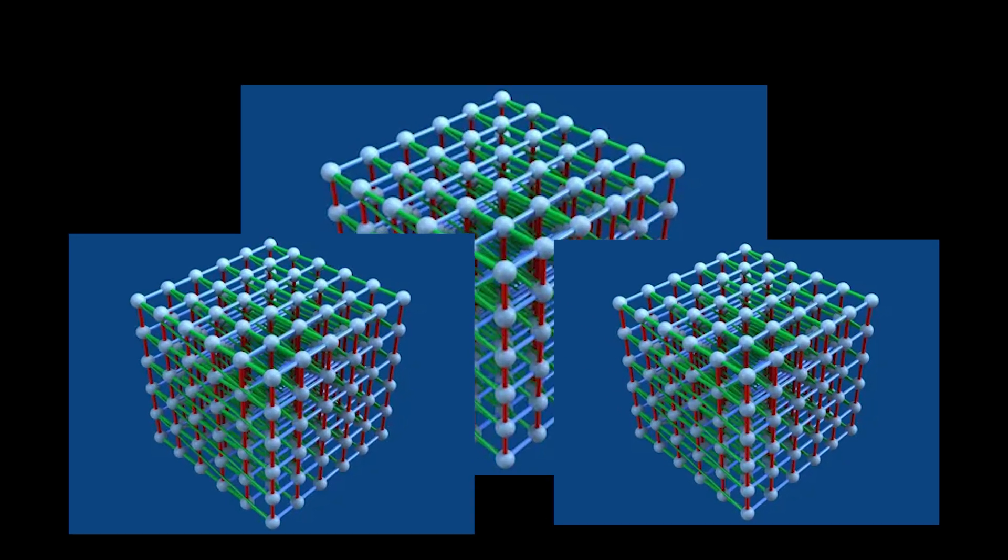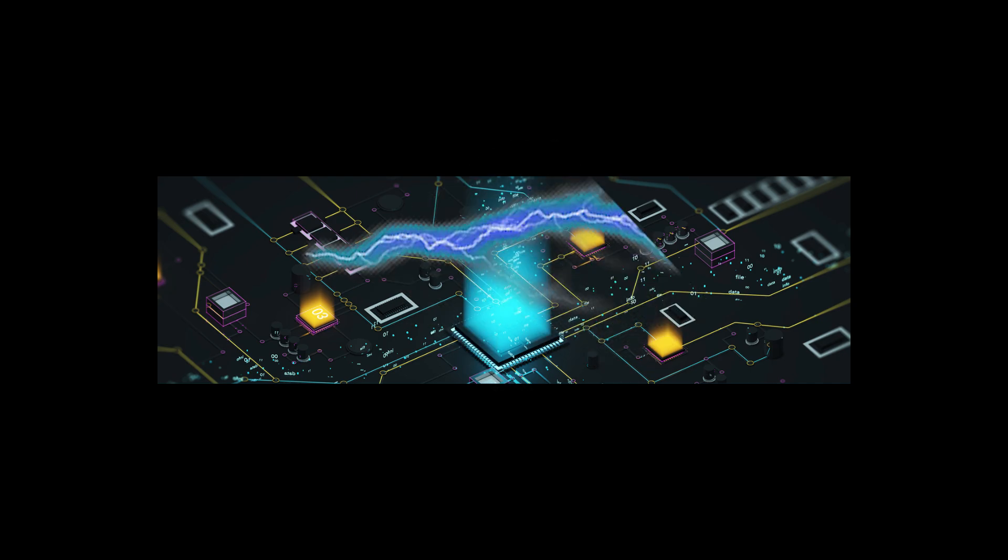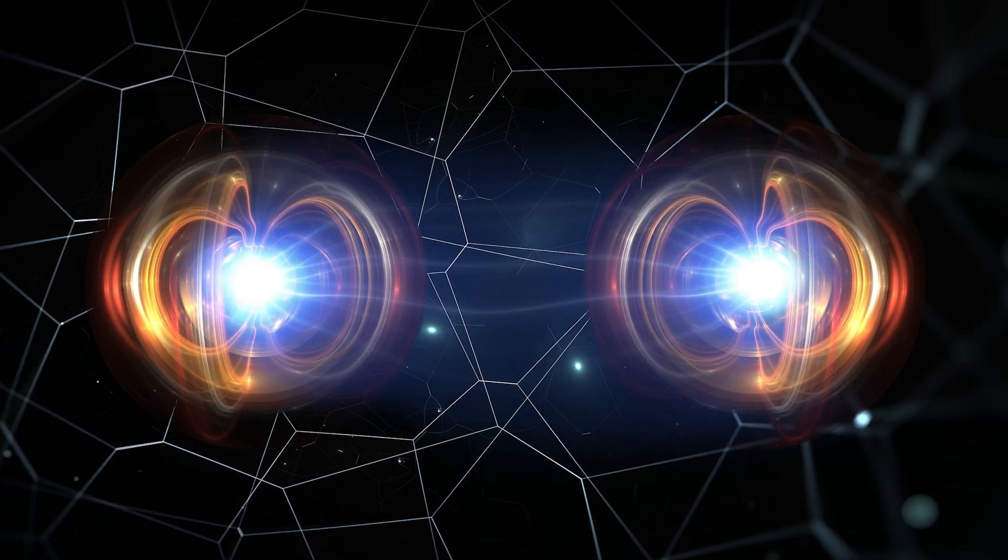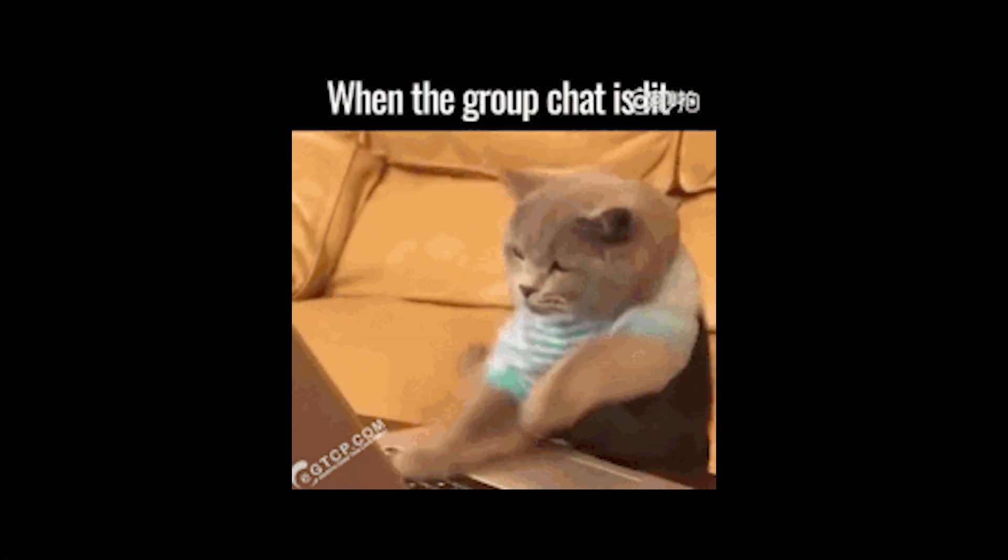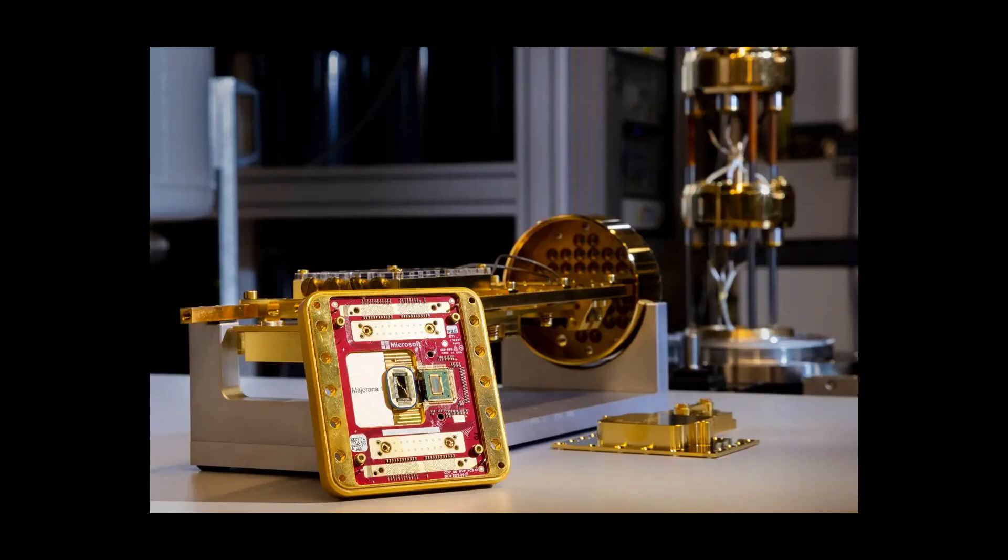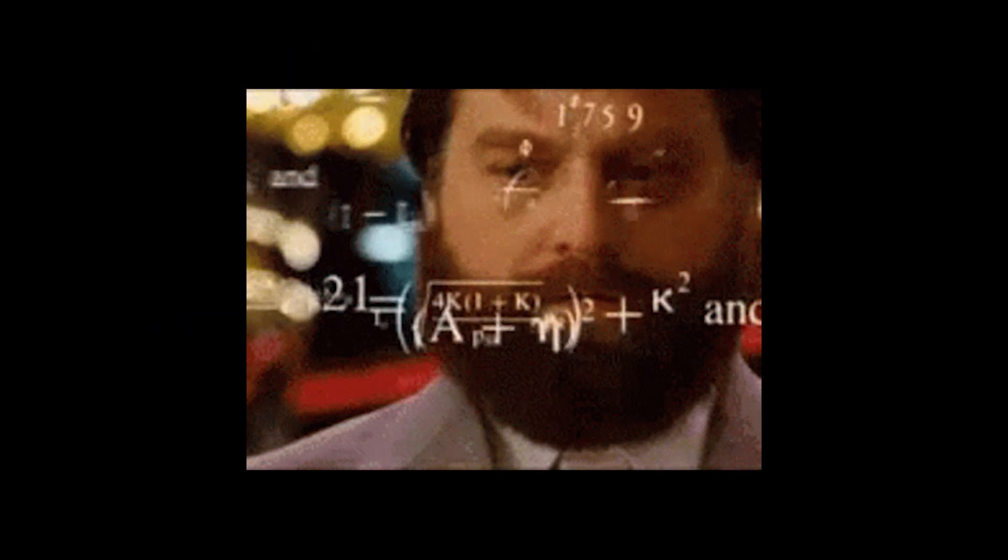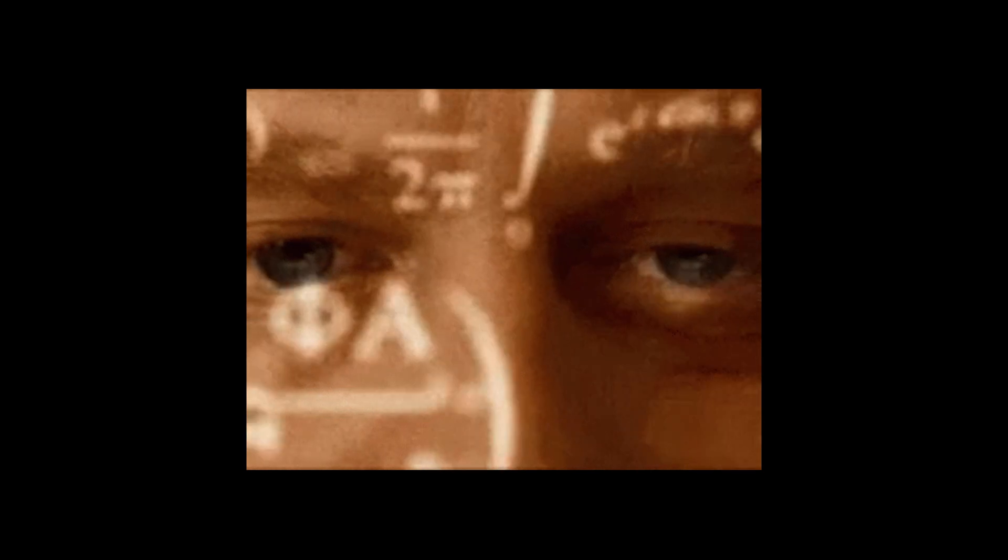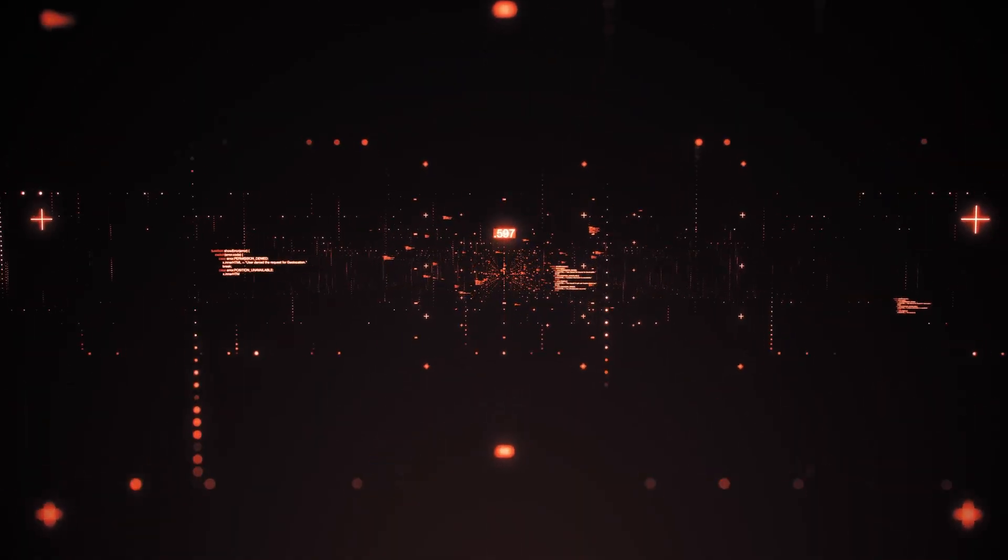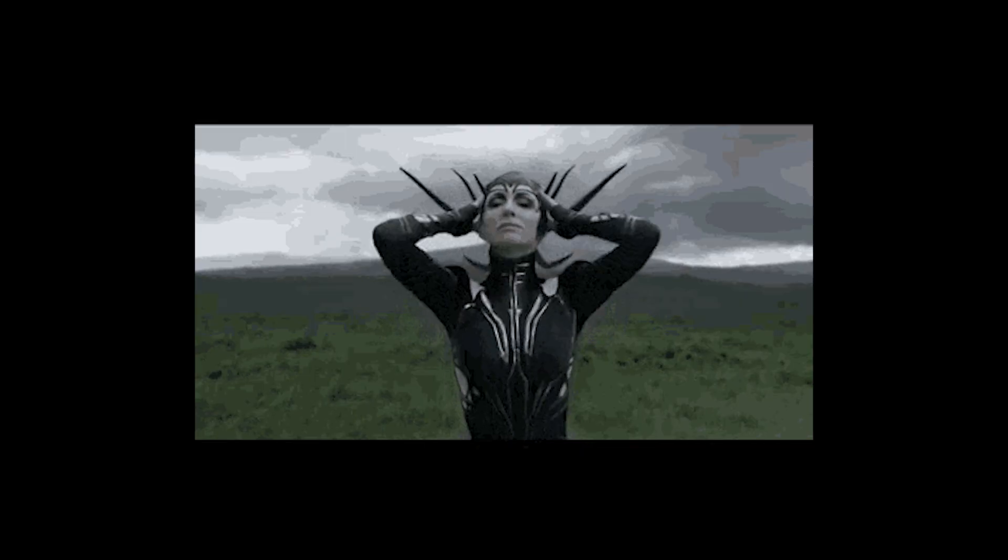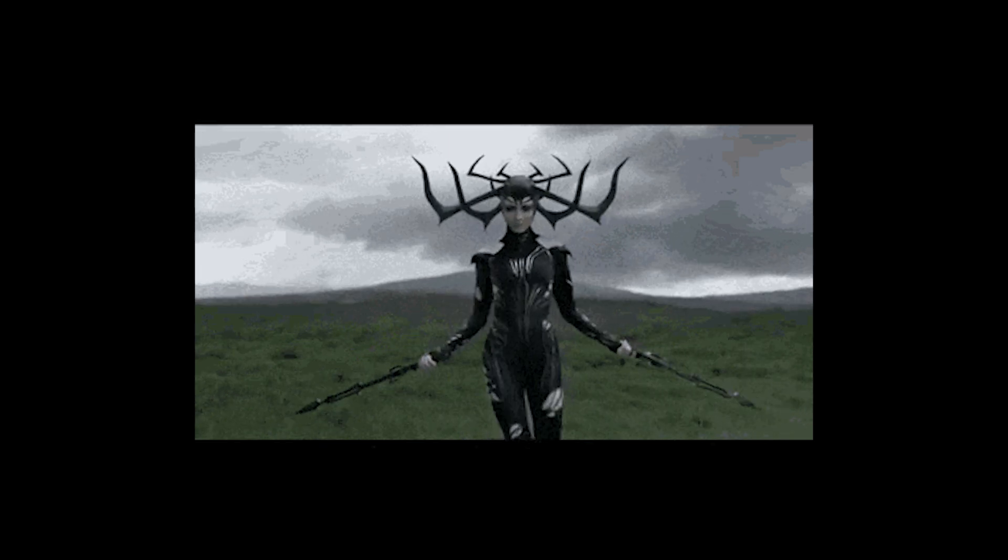And when multiple qubits are linked together, they can instantly influence each other no matter the distance. This is called entanglement, basically a psychic group chat where every qubit knows what the others are doing. Because of this, quantum computers don't just process one calculation at a time like regular computers. They calculate millions of possibilities at once. This makes them exponentially more powerful than any supercomputer today.